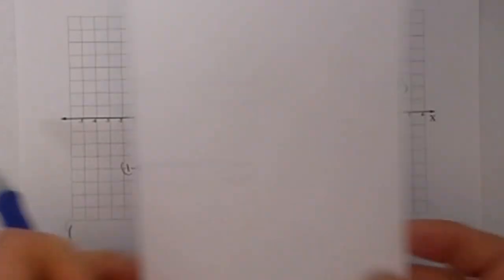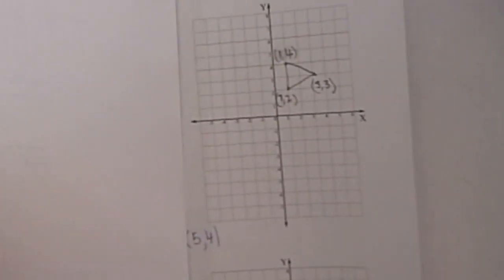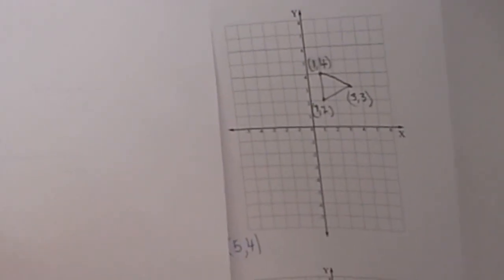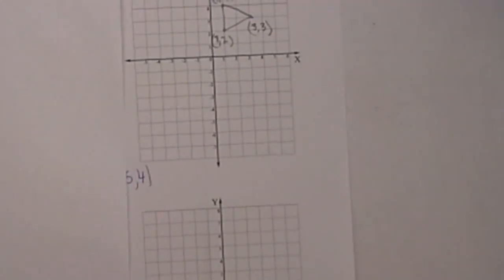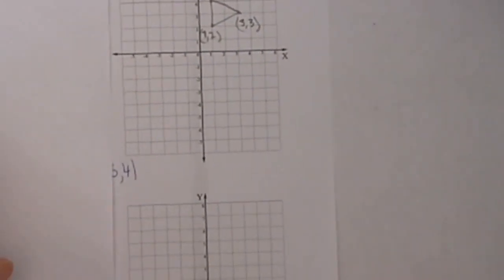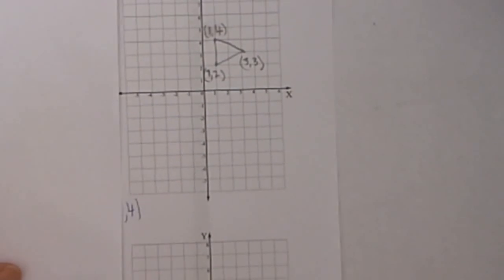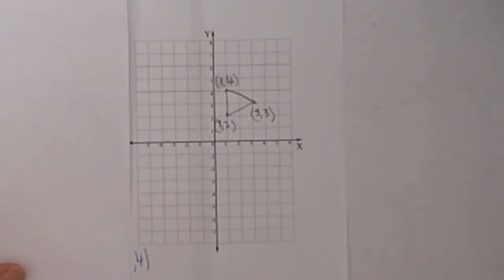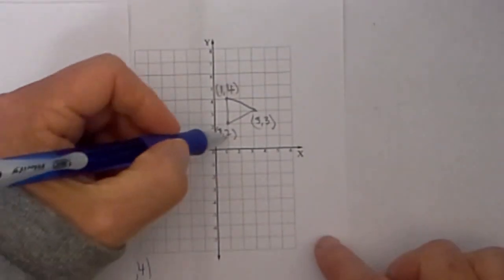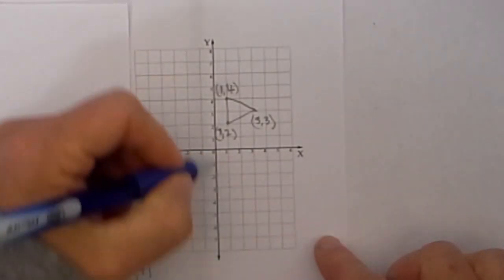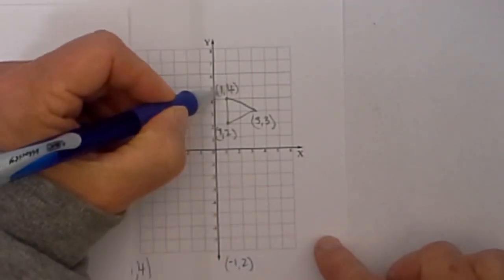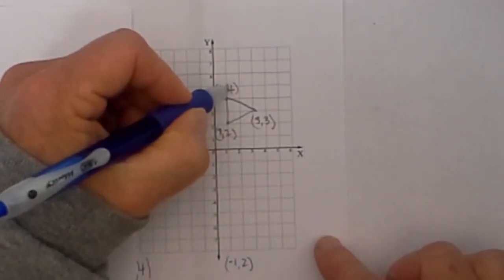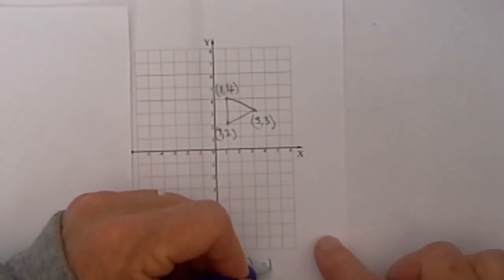Now what if we switch it up and we now will reflect over the y-axis. So what I will do here is I have a very easy reflection. Let's look at this. We have (1, 2), and so this time the y stays the same, so it will be (-1, 2), and then (1, 4). The y stays the same, it will be (-1, 4), and finally we have (-3, 3).